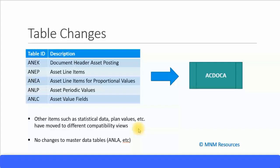Let's look at some of the table changes — we saw this earlier in our overview of Simple Finance, so let's go through it again. All the line item asset line item data tables have now been removed because they will all be posted directly in the universal journal entry table, which is the ACDOCA table. This also includes the asset periodic values as well as the asset value fields, and any other statistical data, plan values, and all have also moved to different compatibility views.